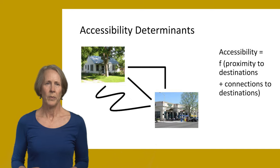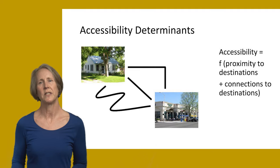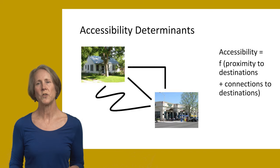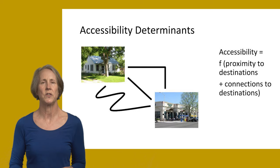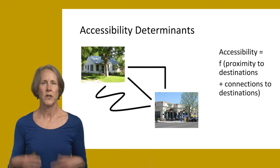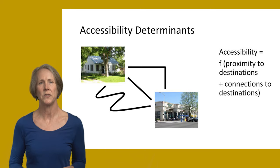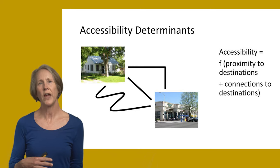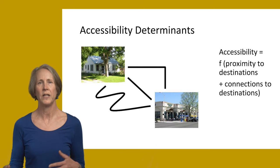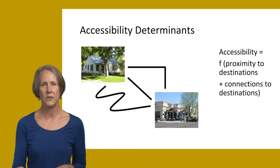Accessibility really has two components and it's important to keep this in mind. Accessibility is a function first of proximity to destinations — how close are you to those destinations you want to get to? But it's also a function of connectivity, or the connections to destinations: how directly does the transportation system link you to destinations? It's those two things together, proximity along with connectivity, that determine your overall accessibility — the ease with which you can get to the places you need to go.